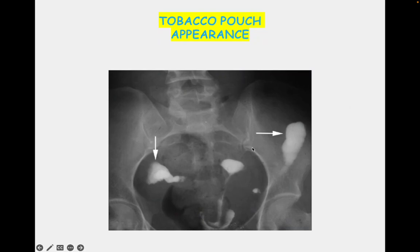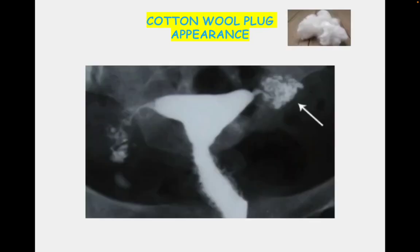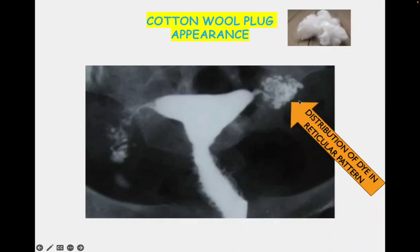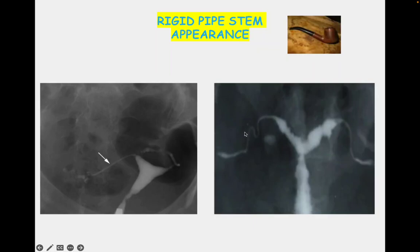Another characteristic picture is the tobacco pouch appearance. This occurs because of ampullary dilation — the ampulla gets dilated, giving the picture of tobacco pouch appearance. Another finding is the cotton wool plug appearance, also seen in tuberculosis patients, where the distribution of dye in a reticular pattern gives a cotton wool plug appearance.